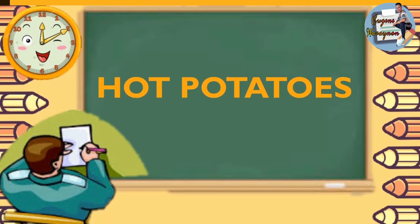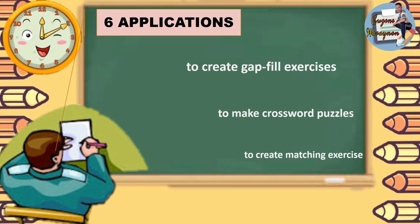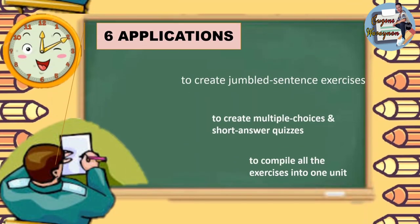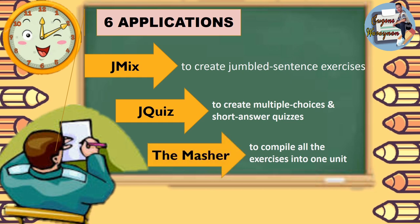Number 4 is Hot Potatoes. Hot Potatoes has 6 applications: J-Cloze, where you can create cloze exercises; J-Cross, where you can make crossword puzzles; J-Match, where you can create matching exercises; J-Mix, where you can create jumbled sentence exercises; J-Quiz for multiple choice and short answer pieces; and J-Masher, where you can compile all the exercises into one unit.